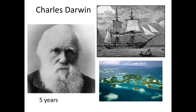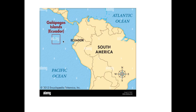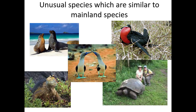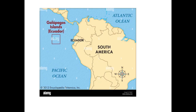Darwin worked for many years on the theory of natural selection by travelling around the Galapagos Islands on his ship, the HMS Beagle, for five years. On his voyage he noticed that unusual species on the islands were very similar to those on the mainland.